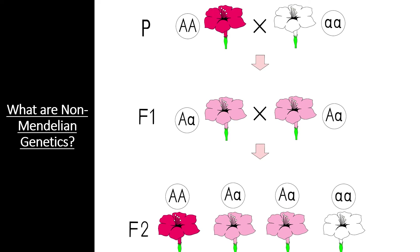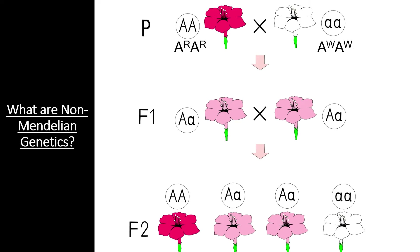Incomplete dominance happens when the heterozygote for a particular trait is a mixture of both homozygous phenotypes. For example, if a red homozygous flower and a white homozygous flower carry alleles with incomplete dominance, the hybrid resembles neither of the parents — in this case, a pink flower is produced. Since neither allele is dominant in the hybrid, they are usually designated with a superscript: superscript R for the red allele and superscript W for the white allele.